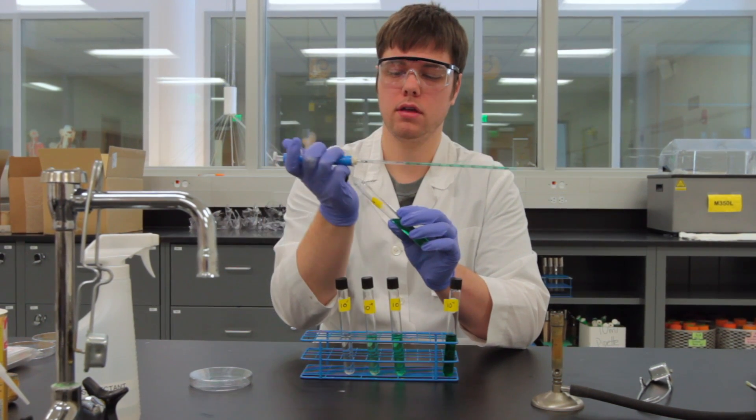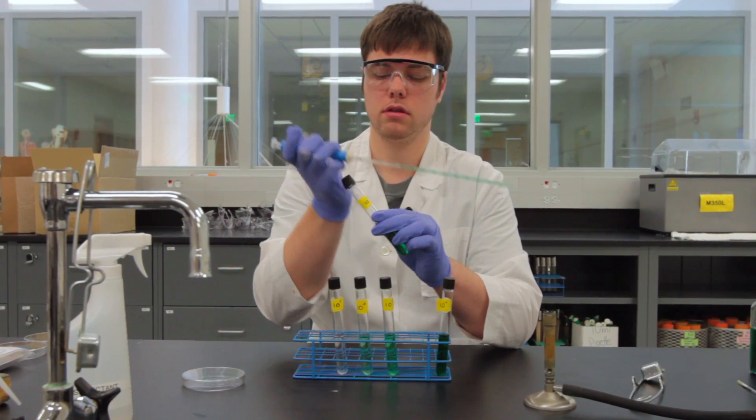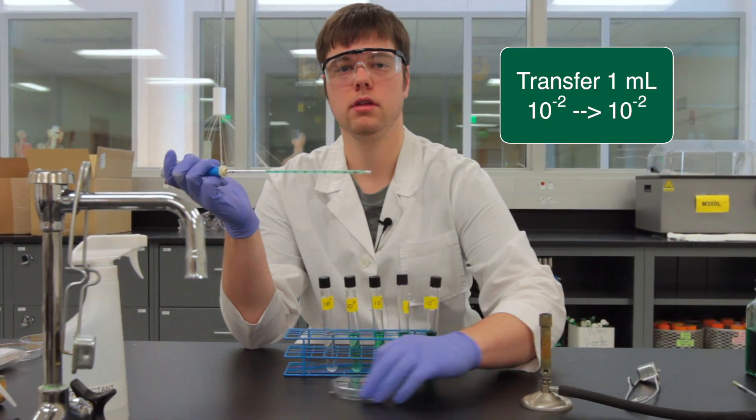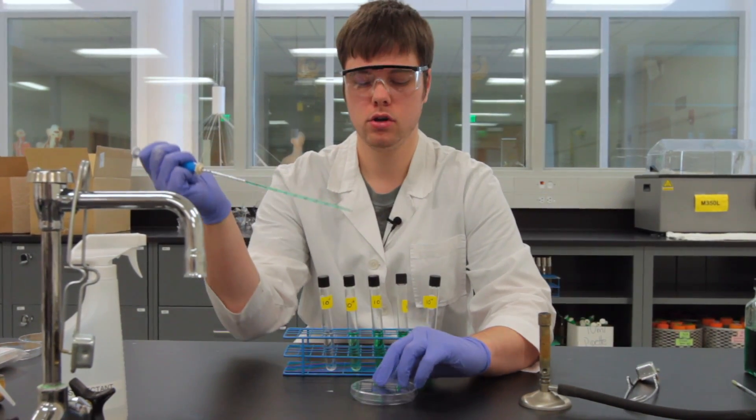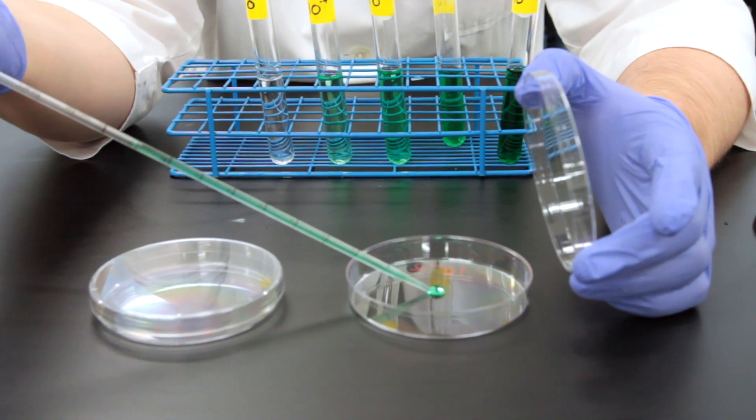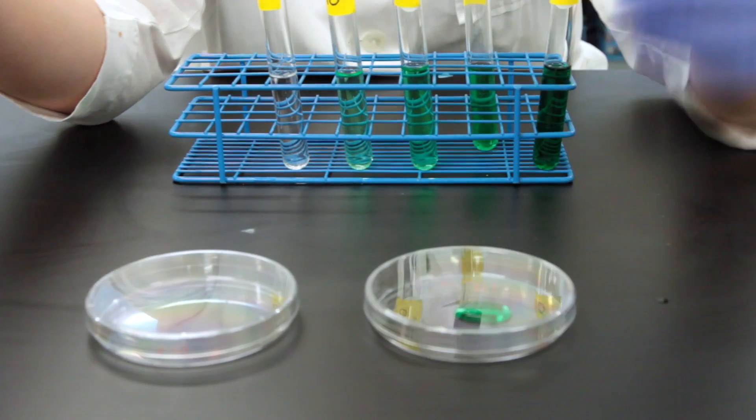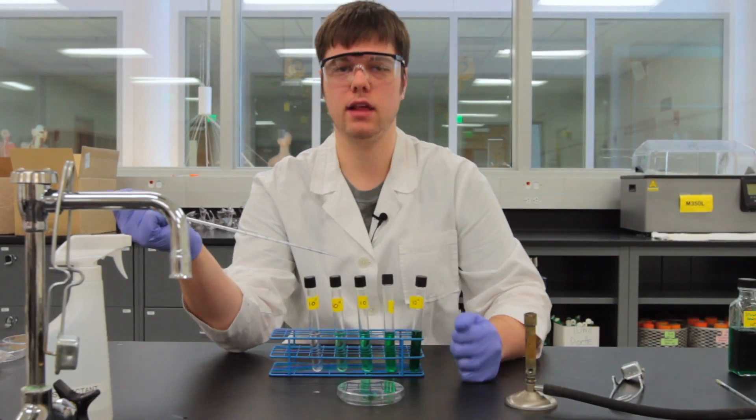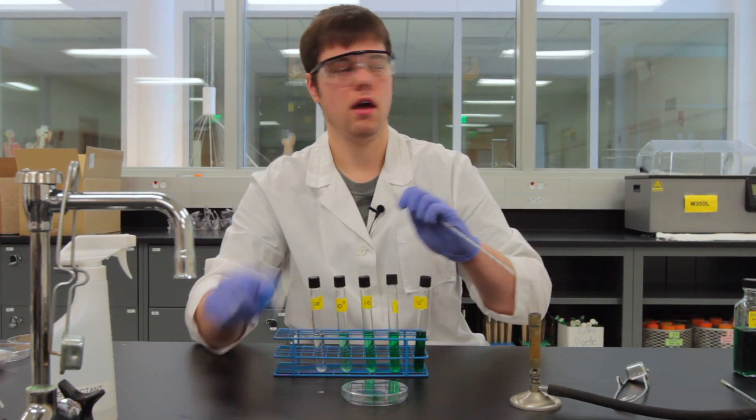We'll cap up our sample, and in our plate that we've appropriately labeled 10 to the negative 2 dilution, we're going to place our one mil directly into the bottom of that plate. Dispensing by pressing that plunger or rolling down on the dial. We'll cap that up to prevent anything from falling into our plate. We'll take that pipette and discard it appropriately.